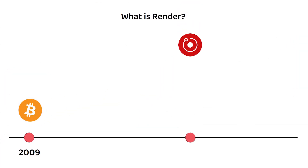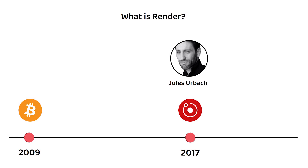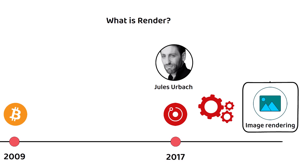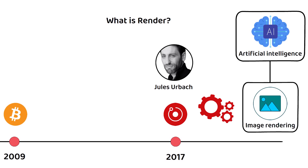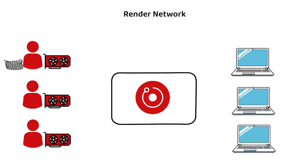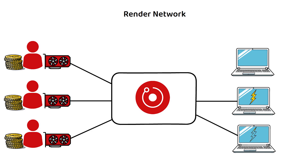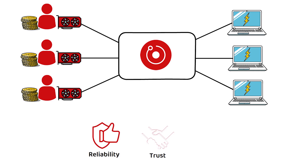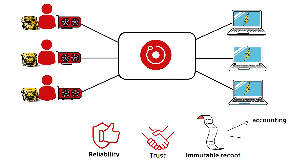Render was founded by Jules in 2017 and is designed to perform an array of computational tasks, from basic image rendering up to aiding in artificial intelligence. The Render network allows GPU owners to generate extra revenue from otherwise idle GPUs by offering them a platform where they can loan their GPU power to creators in need of it. Putting it on the blockchain provides the usual benefits of reliability, trust, and having an immutable record for accounting and auditing purposes, and perhaps most importantly, ensuring everyone gets paid exactly what they need to be paid.